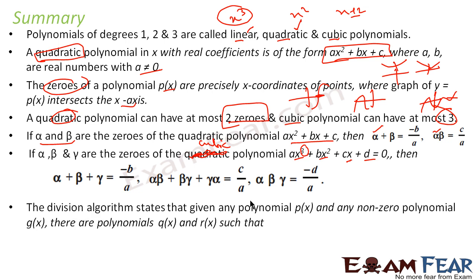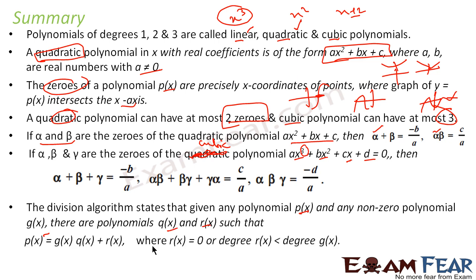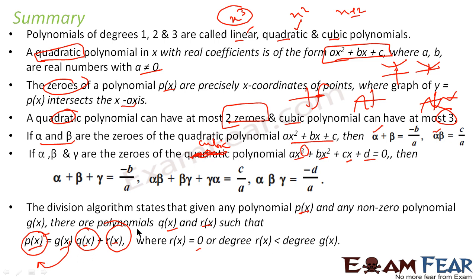The Division Algorithm states that for any polynomial p(x) and any non-zero polynomial g(x), there exist polynomials q(x) and r(x) such that p(x) = g(x)·q(x) + r(x), where q(x) is the quotient and r(x) is the remainder. Here r(x) is either equal to zero, or its degree is less than the degree of g(x).